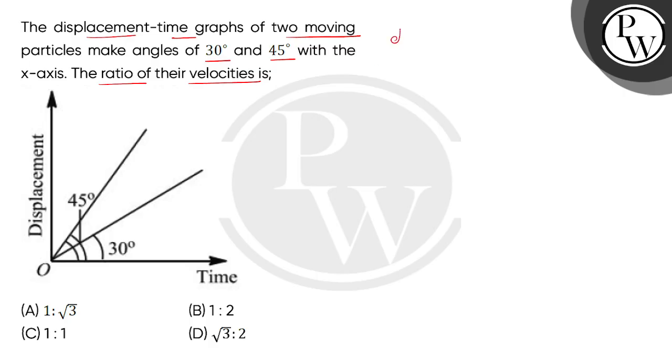Given our question displacement time graph of two moving objects. The time on x-axis and on y-axis is displacement. We have to find their velocities V1 to V2, the ratio.